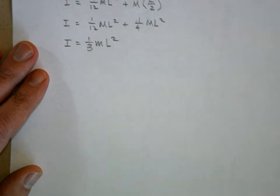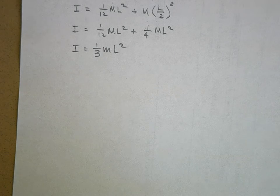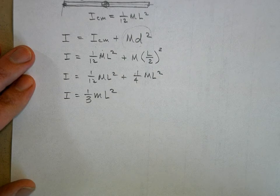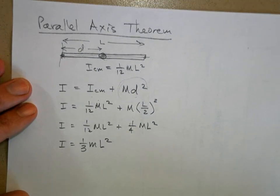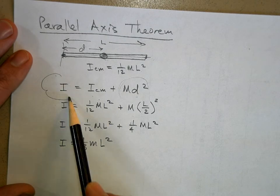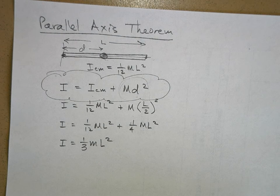So it works. The parallel axis theorem works. And I think there's one problem on the test where there's a rotating object where the axis of rotation is offset from the center of mass. So it's pretty easy to use. The only problem is that some students forget about it. So right now, put a little bubble around this or highlight it or whatever you do. This should be on your equation list. And it's a good thing to know.